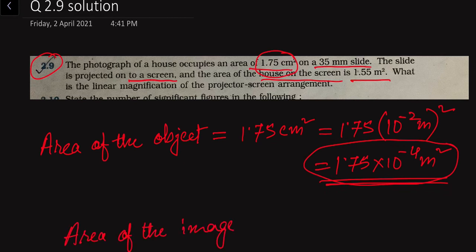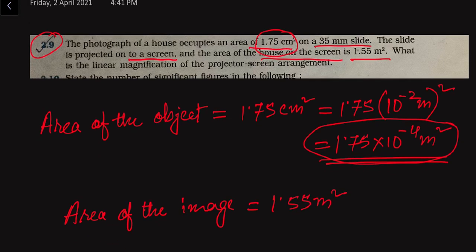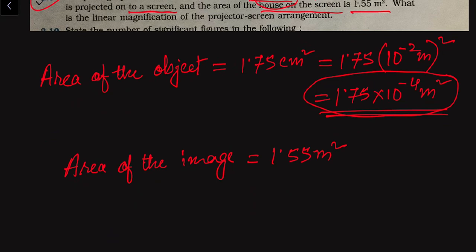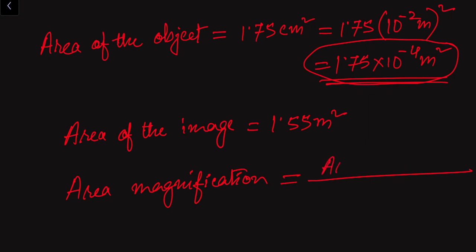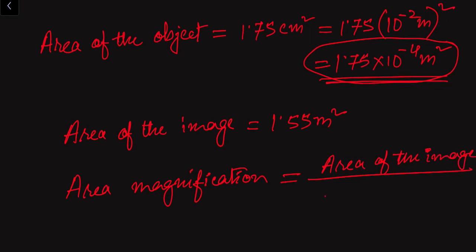Now we have projected the image on a screen, and its area is 1.55 meter square. After magnification we have this much area on the image. The area magnification is calculated by dividing the area of the image by the area of the object.